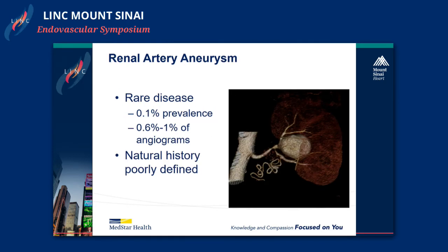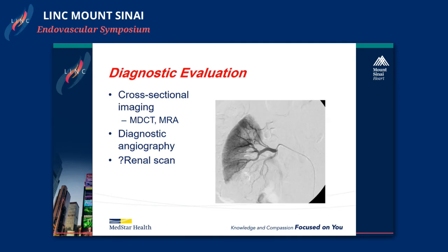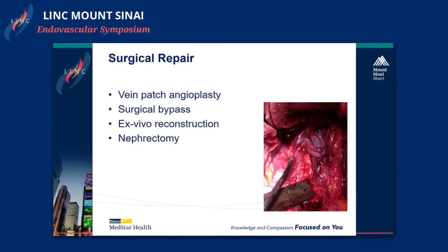Talking about renal artery aneurysms: also relatively rare, and the natural history is poorly defined. Diagnostic evaluation is important — whether it's CT, MR, or diagnostic angiography — to really get a good idea of the anatomy. In renal aneurysms, you may also want to consider what location the vessel is supplying: if you do have to embolize it, how much of the kidney are you going to lose? You may elect to do a renal scan and look at different branches. Indications for repair include size greater than 2 centimeters, women of childbearing age, and hypertension associated with stenosis or fibromuscular dysplasia. Many options are available: vein patch angioplasty, surgical bypass, ex vivo reconstruction, or nephrectomy.